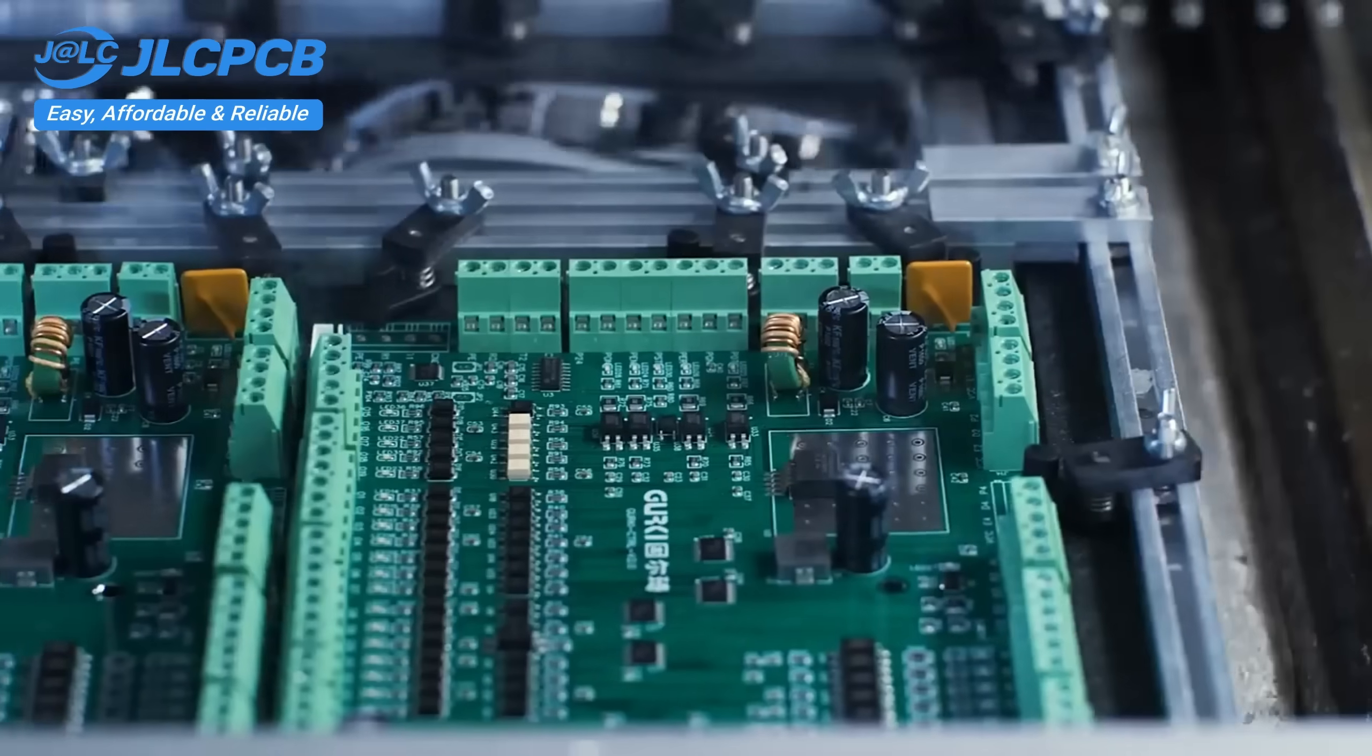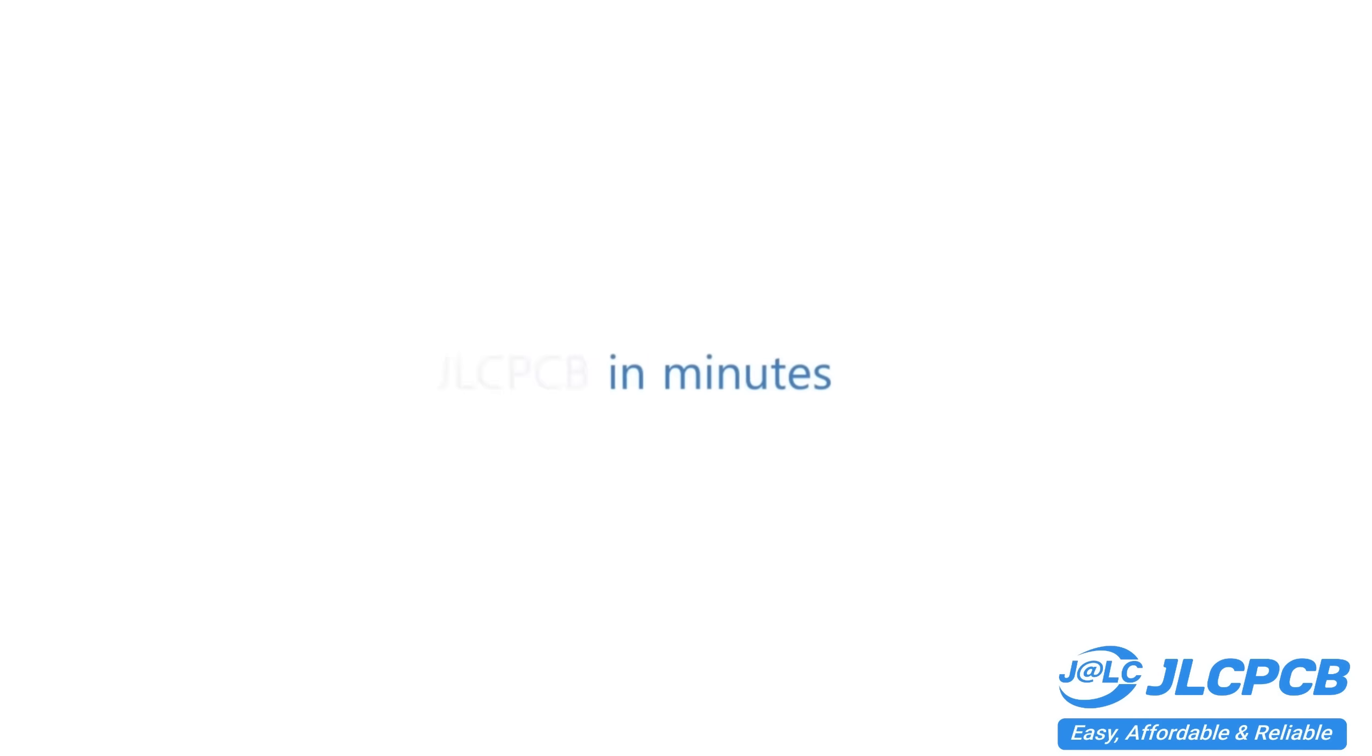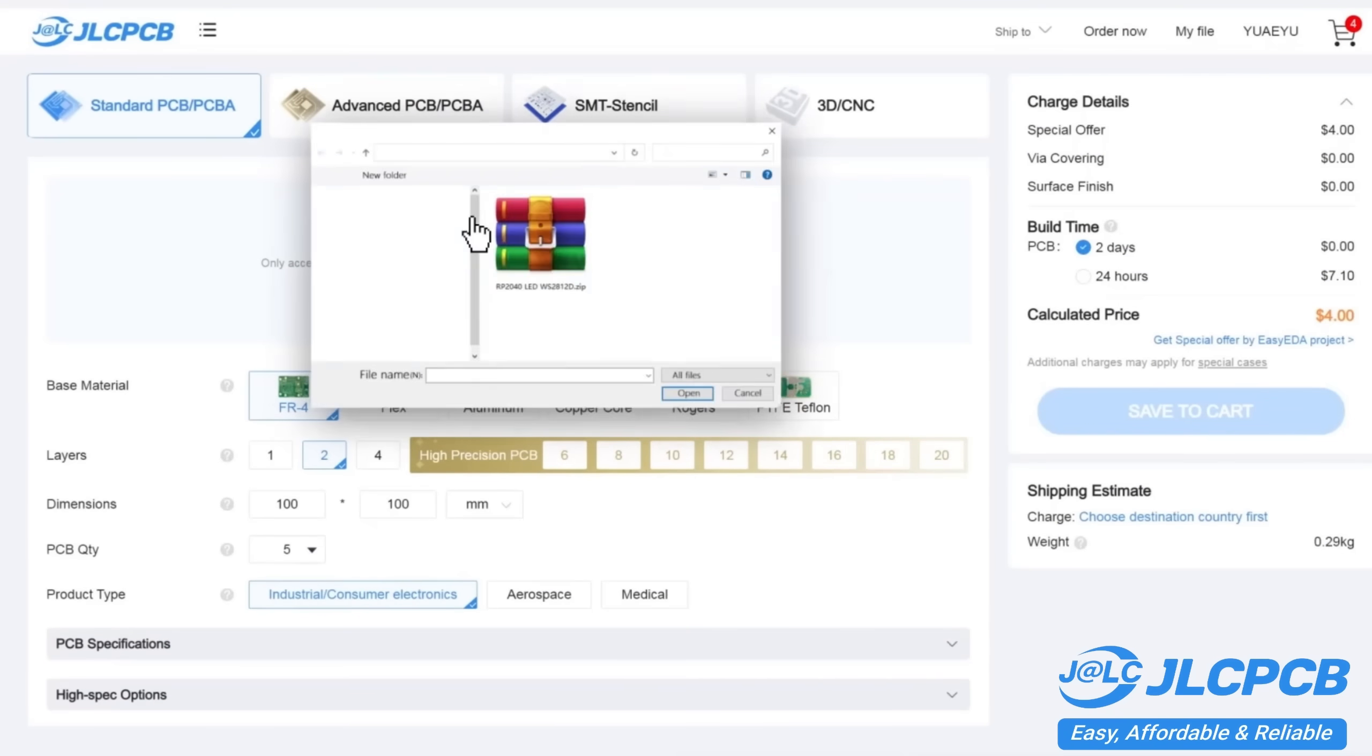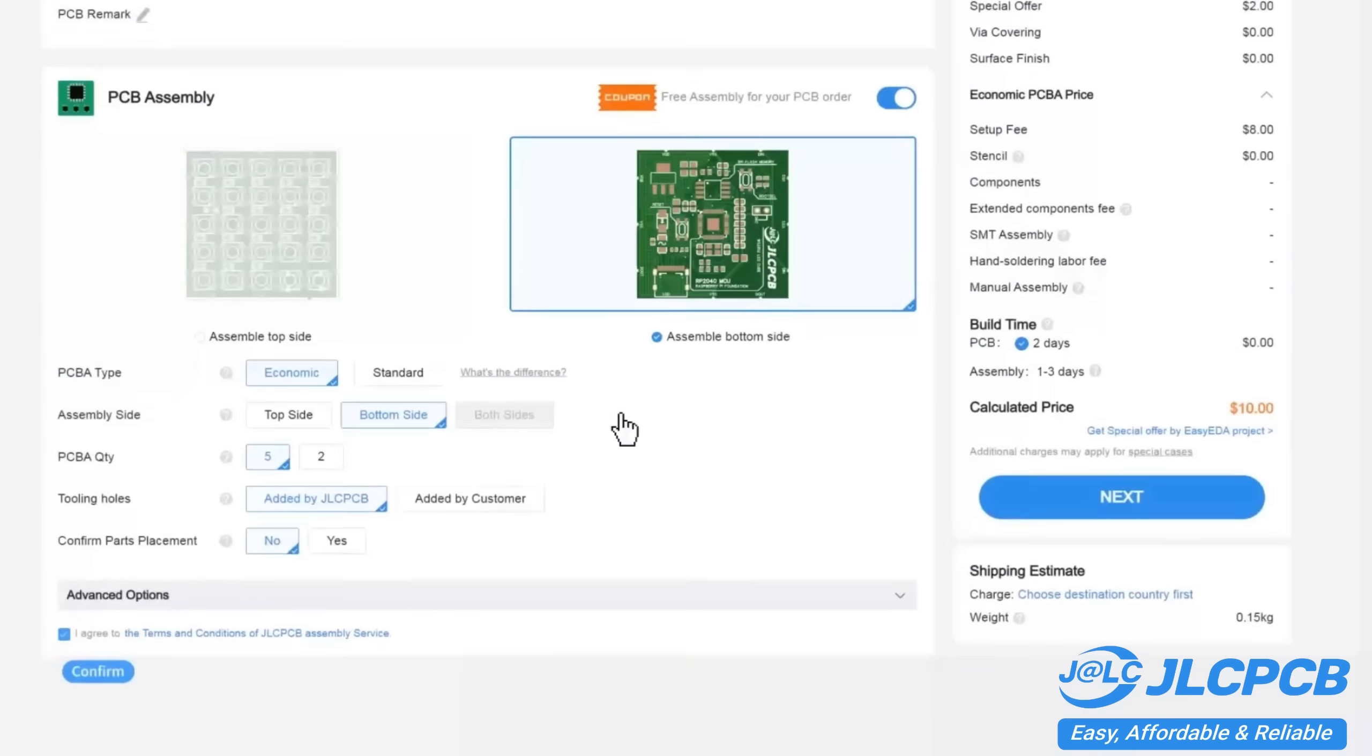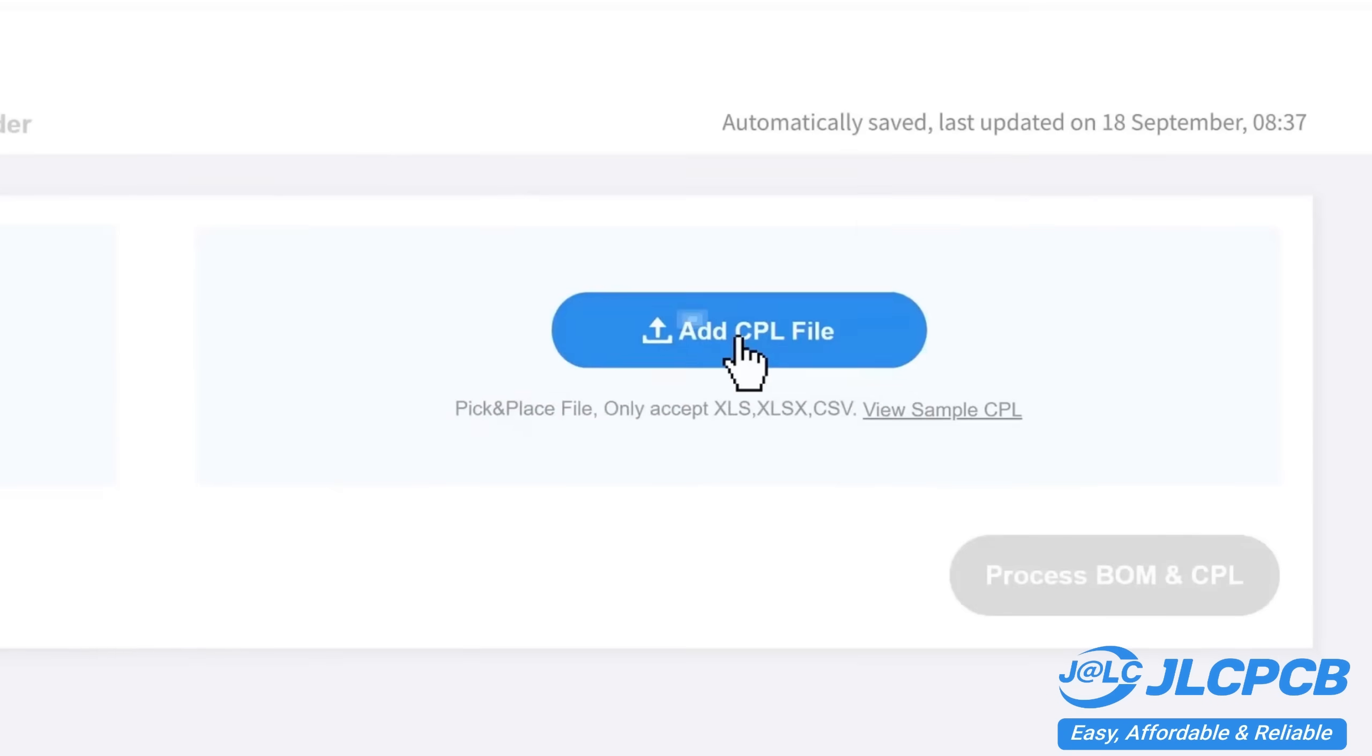PCB customization, component sourcing, stencil manufacturing, and high-precision assembly all in one place. Get one to eight-layer PCBs for just $2, efficient large-scale production reducing costs and bringing you unbeatable prices.